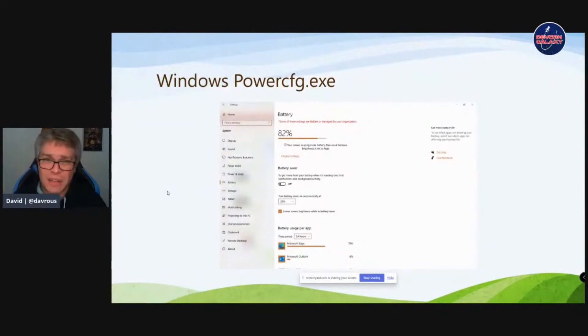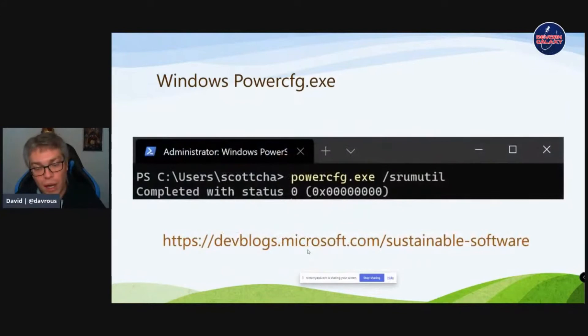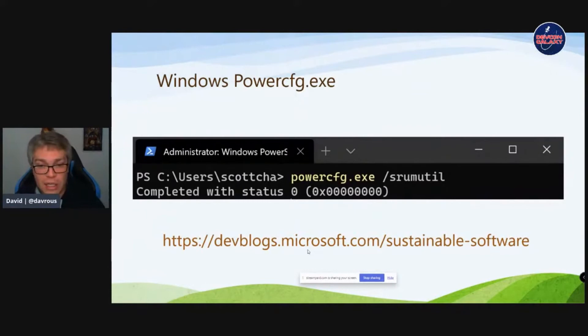The tool I've been using for benchmarks is powercfg. On Windows, the OS can tell you where you're spending the most energy — in my screenshot it was Microsoft Edge and Microsoft Outlook. You run a command-line tool and it gives you the number of joules consumed by a specific application. I've been using this approach to measure the energy spent by Microsoft Edge during various benchmarks — checking the number of joules consumed by different tasks.